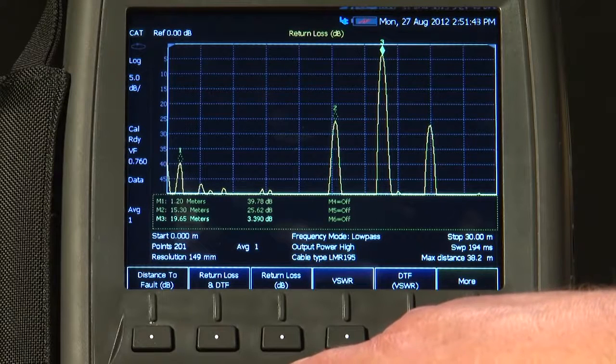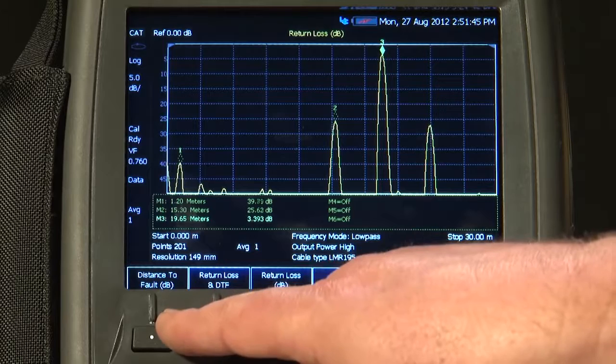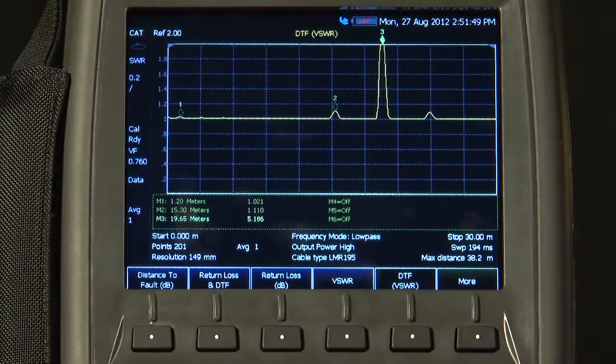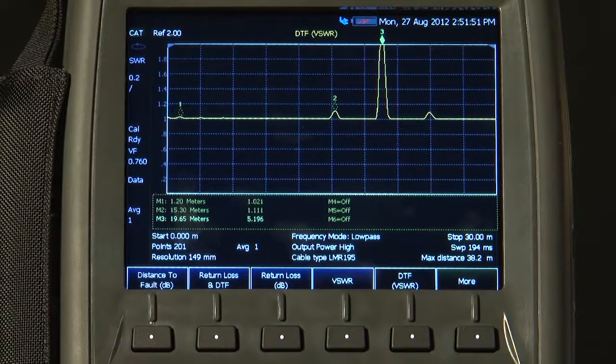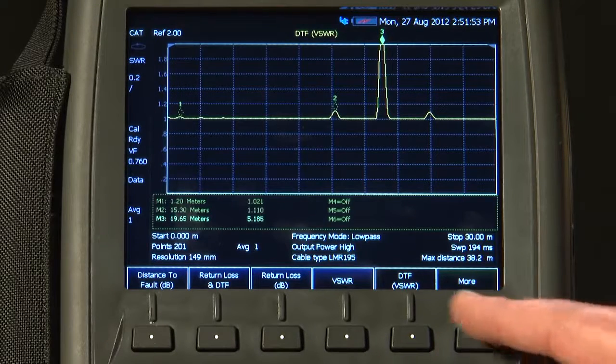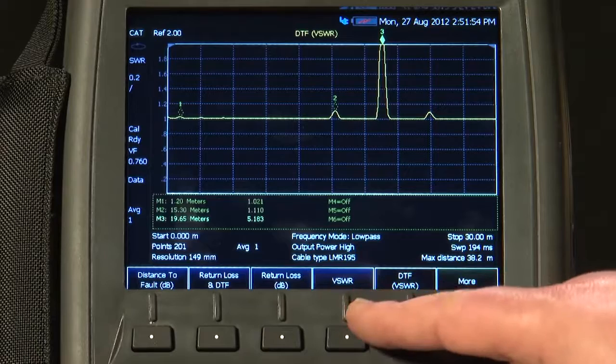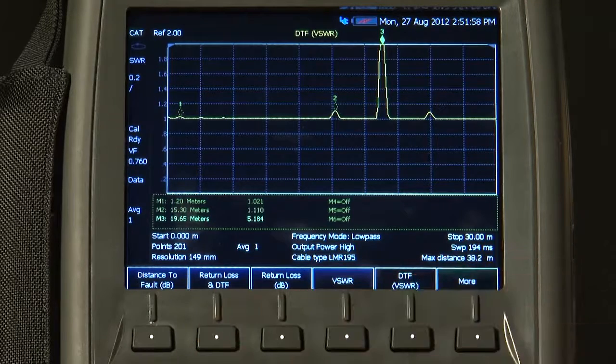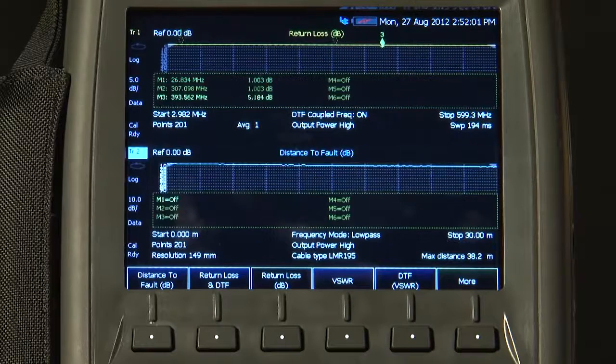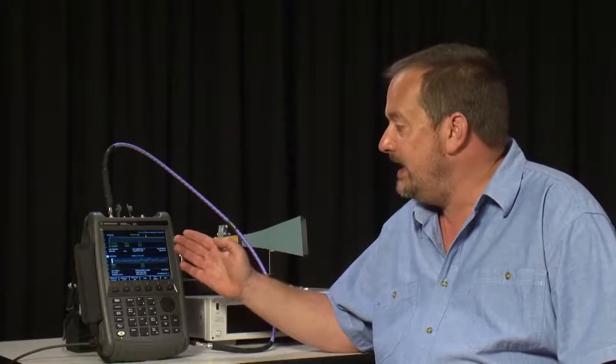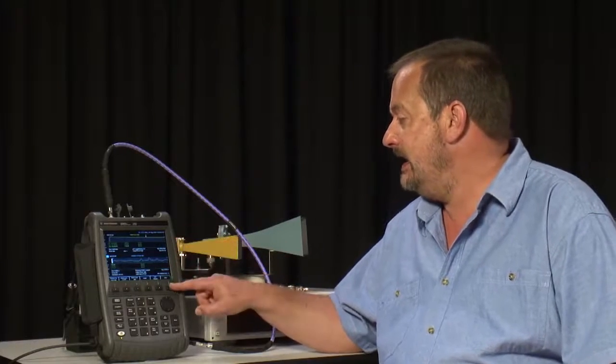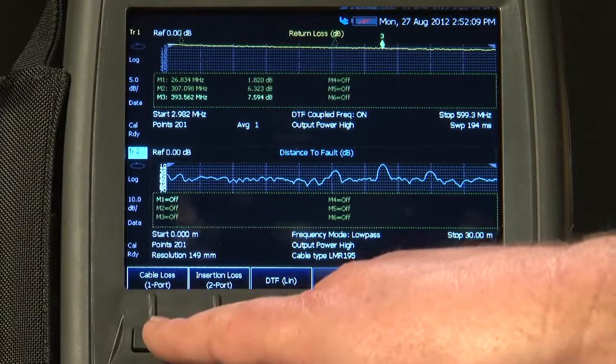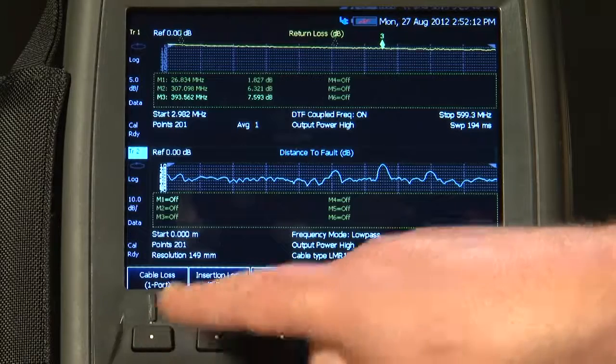Now, you might also have noticed that under the measure key here, we can, as well as measuring distance to fault in dB, measure distance to fault in VSWR if you prefer VSWR. Similarly, when we were measuring return loss before, we could have just measured the VSWR of the antenna. We can also, interestingly, show return loss and distance to fault on the same display at the same time. And if I press the More key, we can even do a single port cable loss measurement. Now, that's very useful.